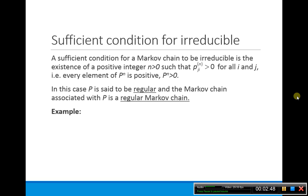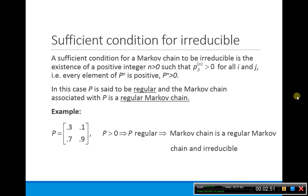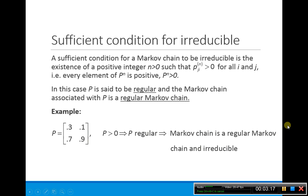Let's look at an example. Our P matrix has two states. State 1 goes to state 1 with probability 0.3, and to state 2 with probability 0.7. State 2 goes to state 1 with probability 0.9, and to state 2 with probability 0.1. All entries are positive, so P is positive, meaning P is regular, and we have an irreducible Markov chain.